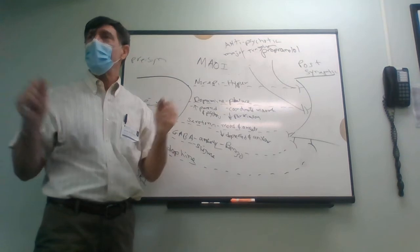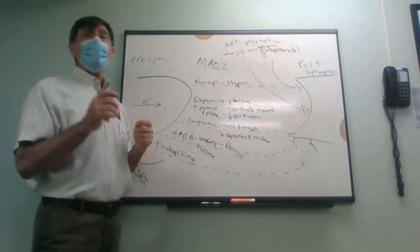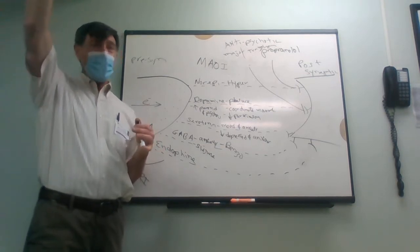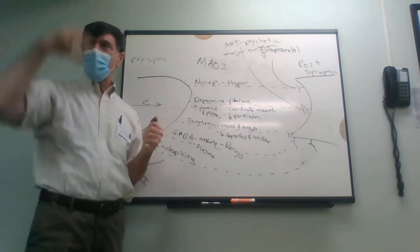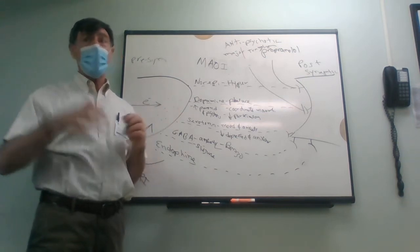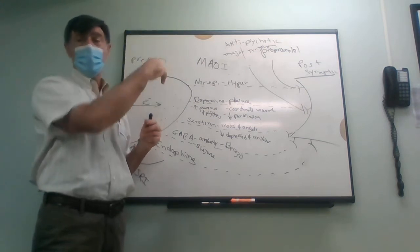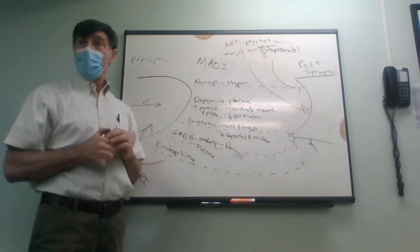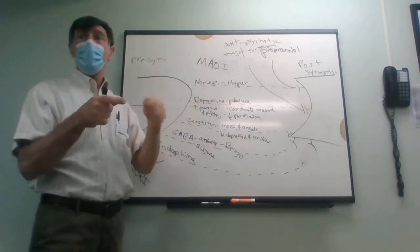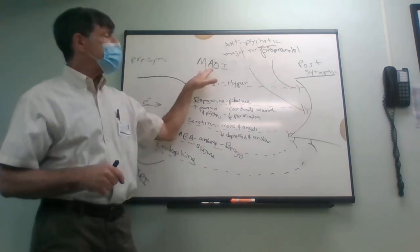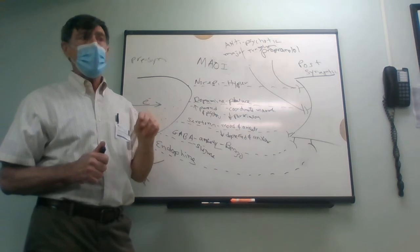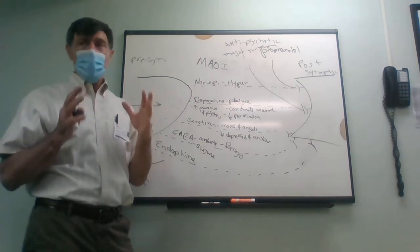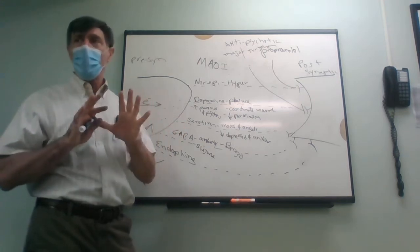MAOIs aren't used much anymore because they have many side effects. You're giving a depressed person — who could be suicidal — the ability to harm themselves if they eat aged foods. Patients on MAOIs must avoid aged foods, beer, wine, particularly Chianti wine. If a patient is on this, tell them to avoid aged foods. The dietician will come and talk to them about what they can and cannot eat.